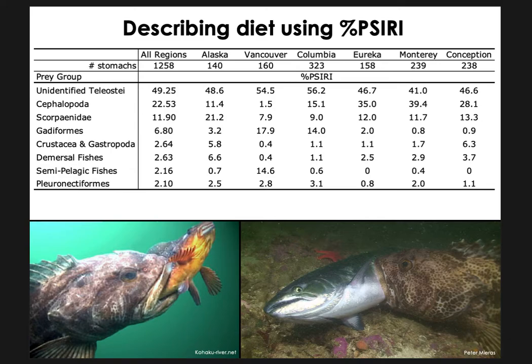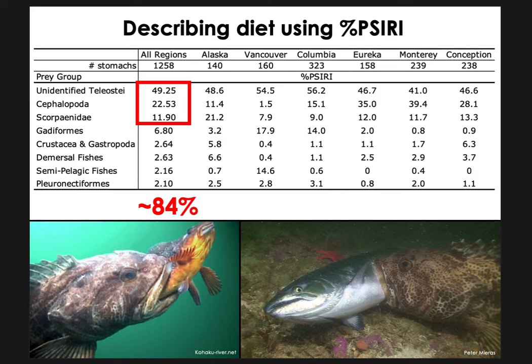Of the 1,258 stomachs, 61 types of prey items were sorted into 8 prey groups. The prey groups are listed with their percent prey-specific index of relative importance by region. PSIRI is a valuable metric in that it uses a combination of prey-specific abundance by number, prey-specific abundance by weight, and frequency of occurrence to indicate the most important prey items. The unidentified teleost prey group was for occurrences where there were only miscellaneous fish bones and essentially fish mush; however, this group was overwhelmingly important across all regions. Together, unidentified teleosts, cephalopods, and scorpaenids comprised just shy of 84% PSIRI across all regions.